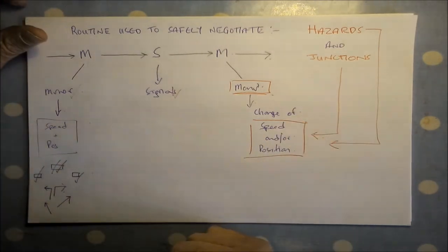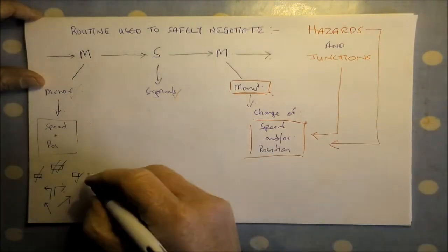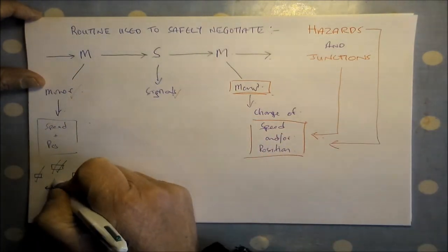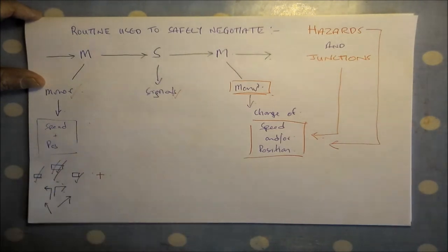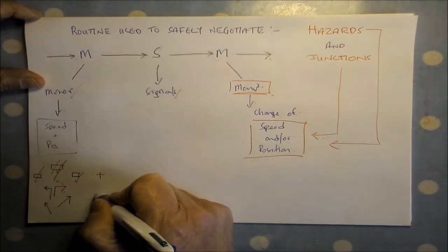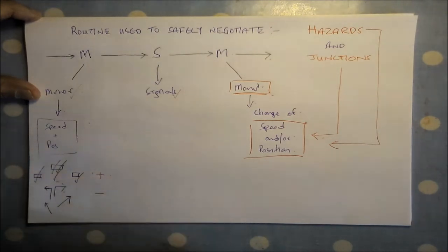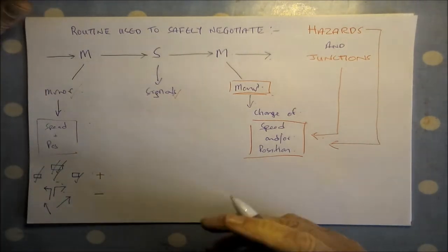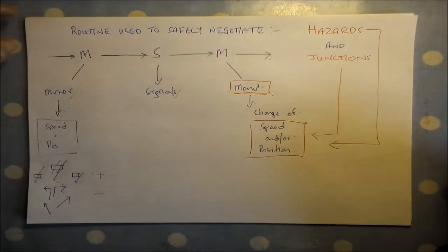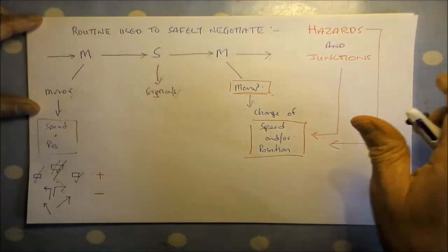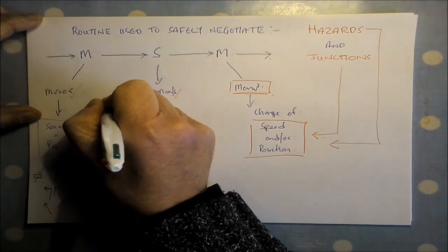If your maneuver involves a turn to the left or a positional change to the left, it will be your main mirror first and then your left door mirror. So you're checking your mirrors in pairs for directional changes. If you're going to add speed, you check your main mirror first, then your right door mirror and your left door mirror. If you're going to lose speed, you again check your main mirror first and then the door mirrors.